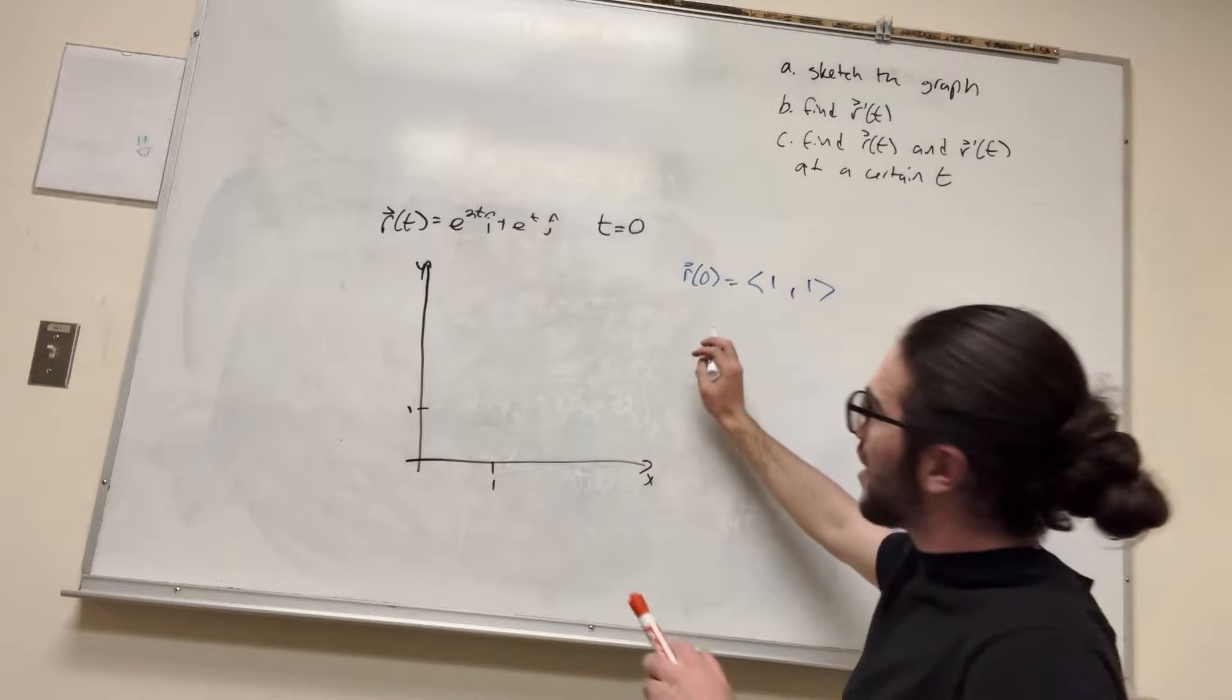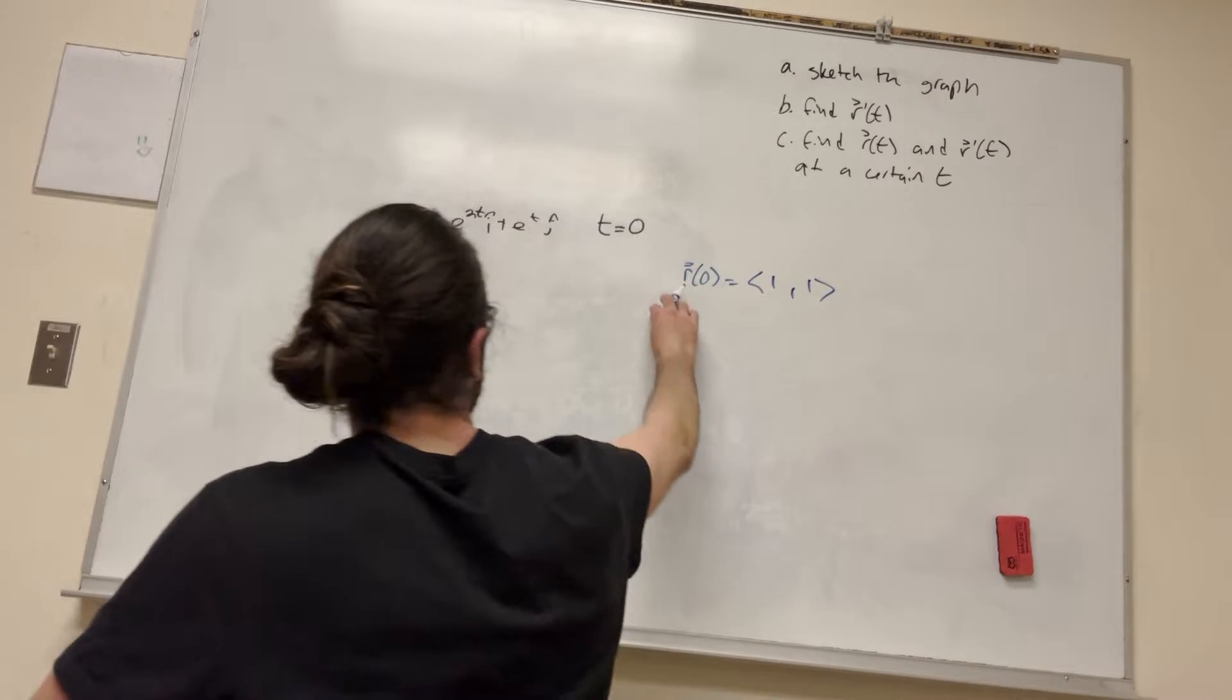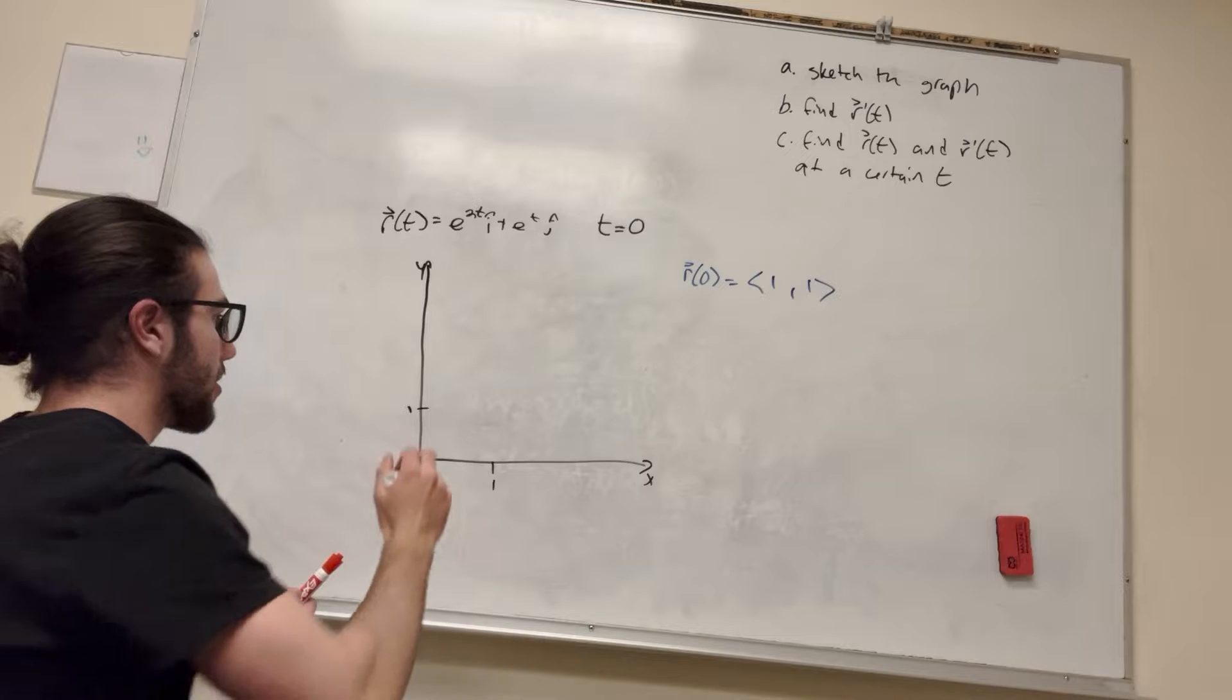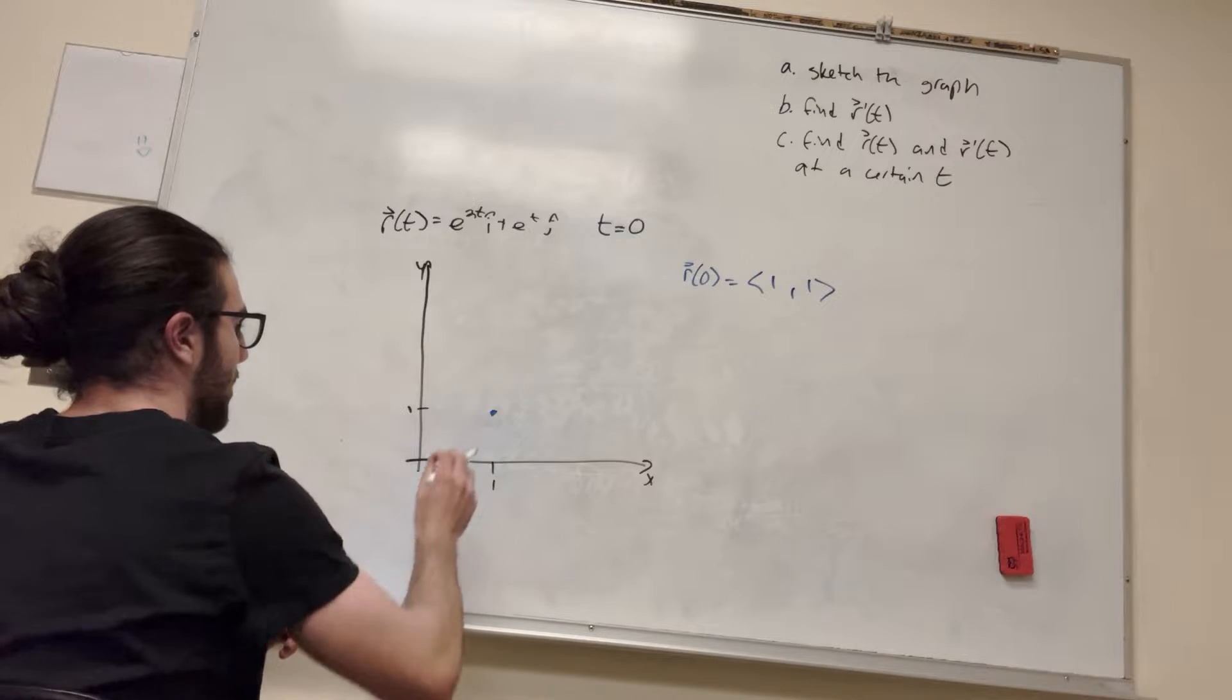So this is a position, right? This is telling us that at r of 0, it's going to be equal to 1, 1. It's a vector, basically, from here. So that's where it's at.